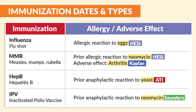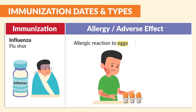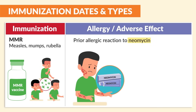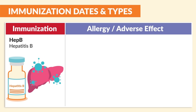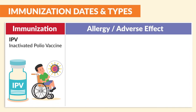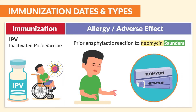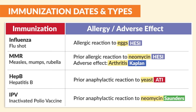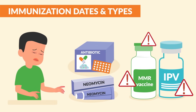Switching gears to allergies and adverse effects with immunizations. For influenza (the flu shot), clients might have a reaction if they have an allergic reaction to eggs, as mentioned by HESI. For MMR, if they have a prior allergic reaction to neomycin (the antibiotic), as mentioned by HESI — and the adverse effect is arthritis, per Kaplan. For Hep B (hepatitis B vaccine), prior anaphylactic reaction to yeast, per ATI. For IPV (the polio vaccine), prior anaphylactic reaction to neomycin, per Saunders. Neomycin was a huge issue — any client with an allergic reaction to neomycin will likely react to the MMR and polio vaccines.